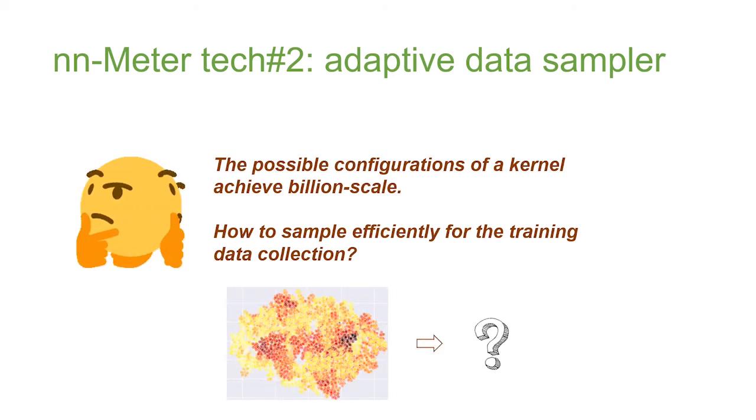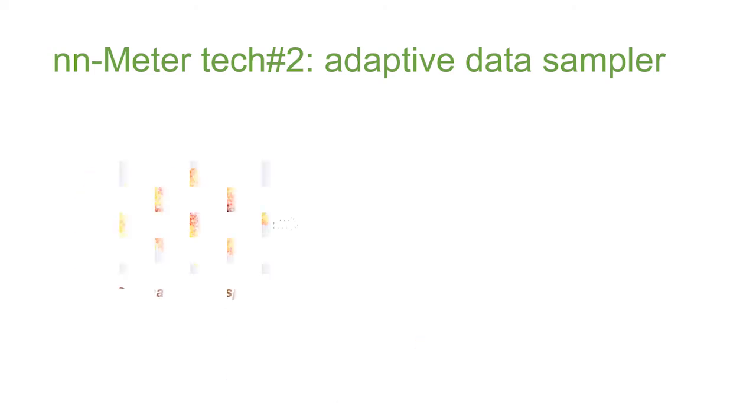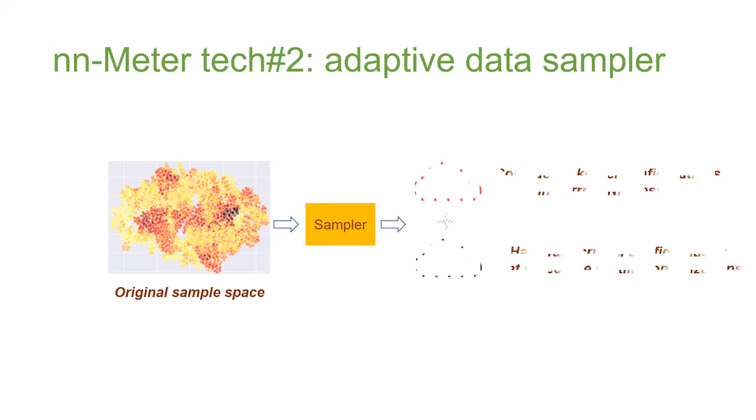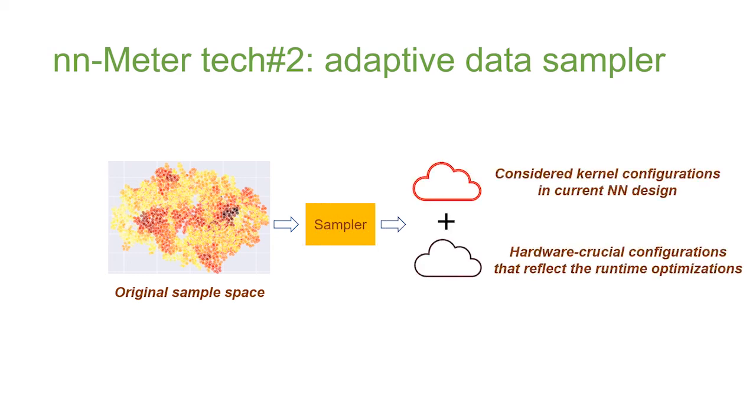However, the sample space for kernels is too large. NN Meter samples two groups of data. We cover the possible kernel configurations in current model design, and we consider the hardware crucial data that reflect the runtime optimizations.